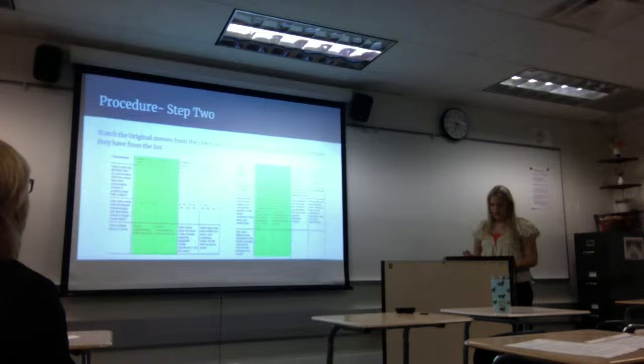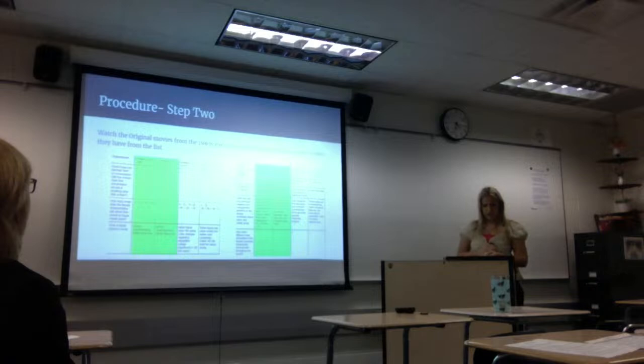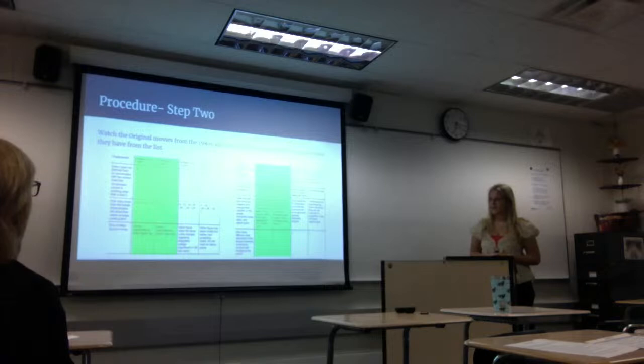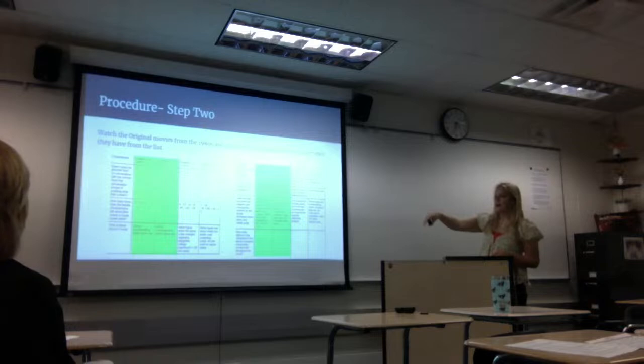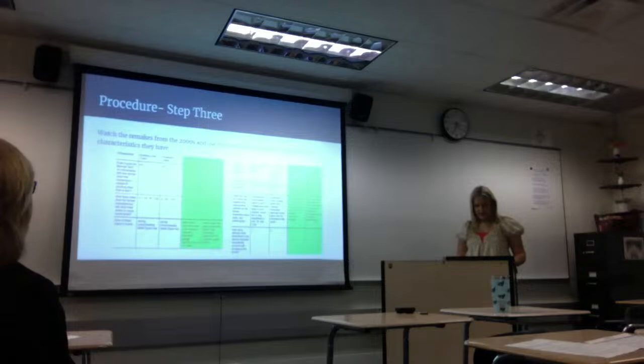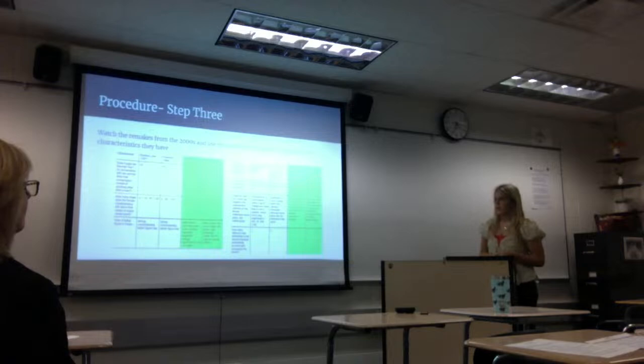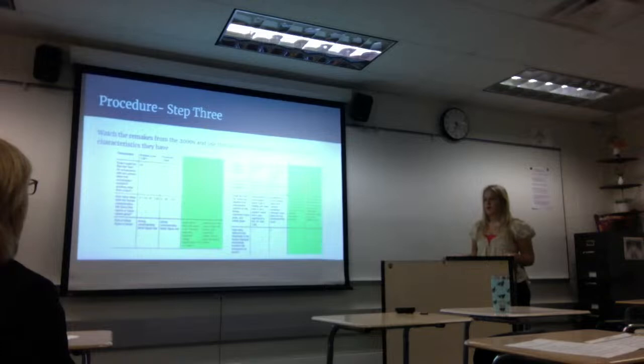After identifying these characteristics, I watched the original 1980s movies and checked off which qualities they had on the list, adding significant details and timestamps so I could go back during analysis. My third step was to do the same for the 2000s remakes — watching them, checking off characteristics, and noting details and timestamps.